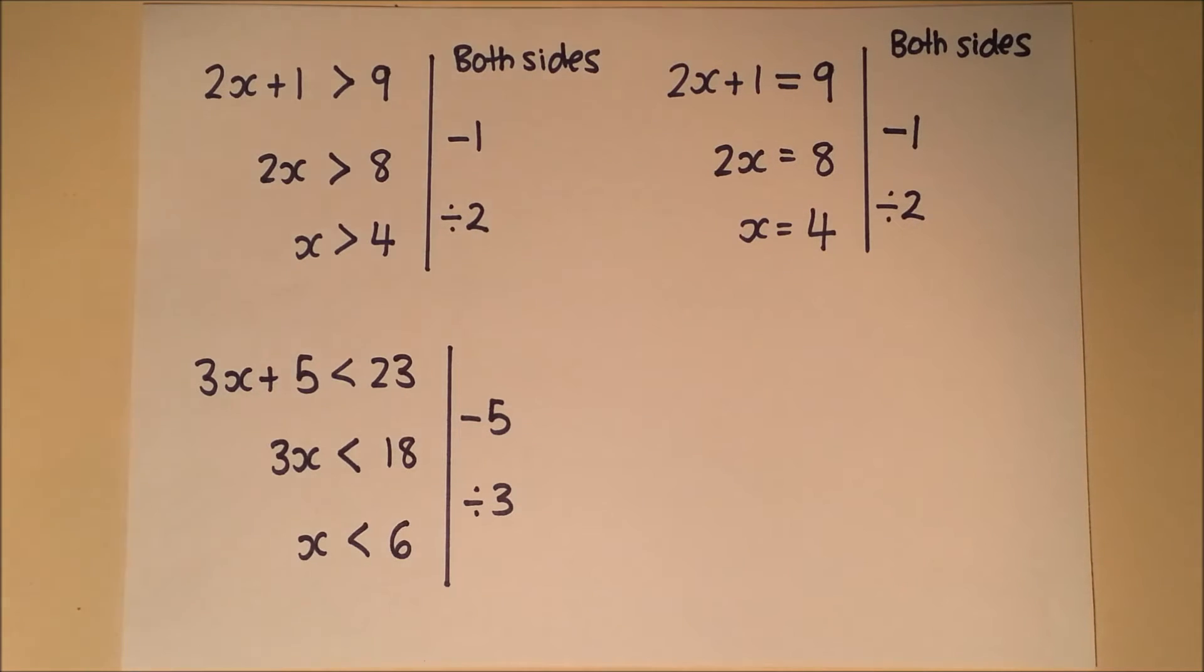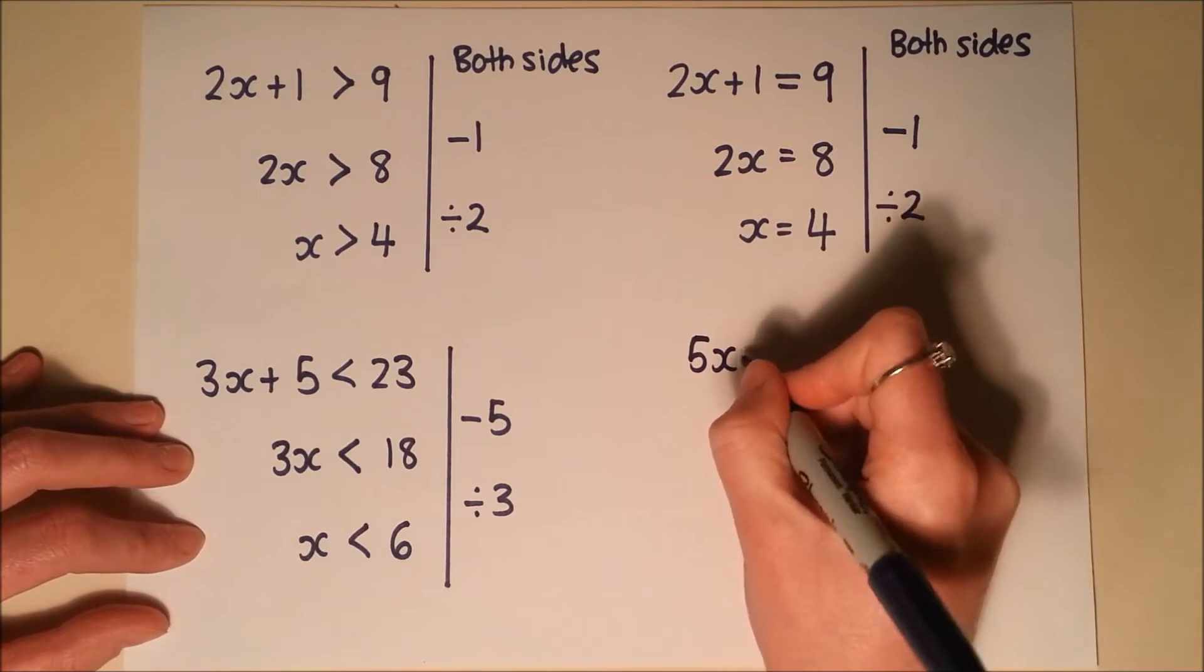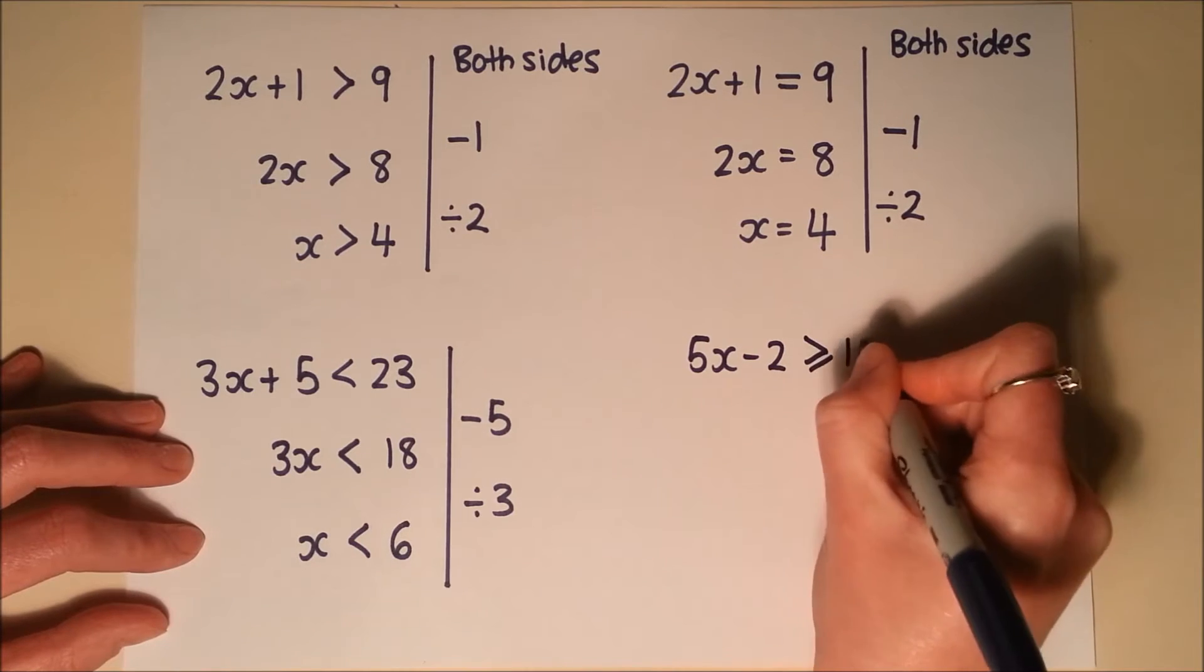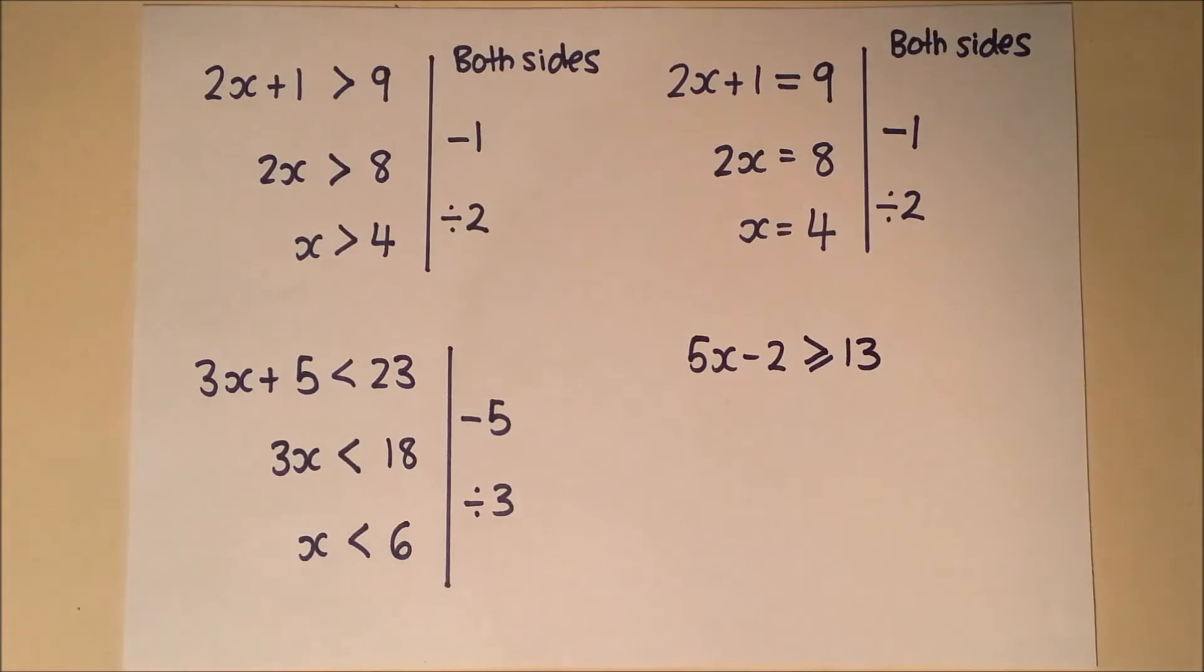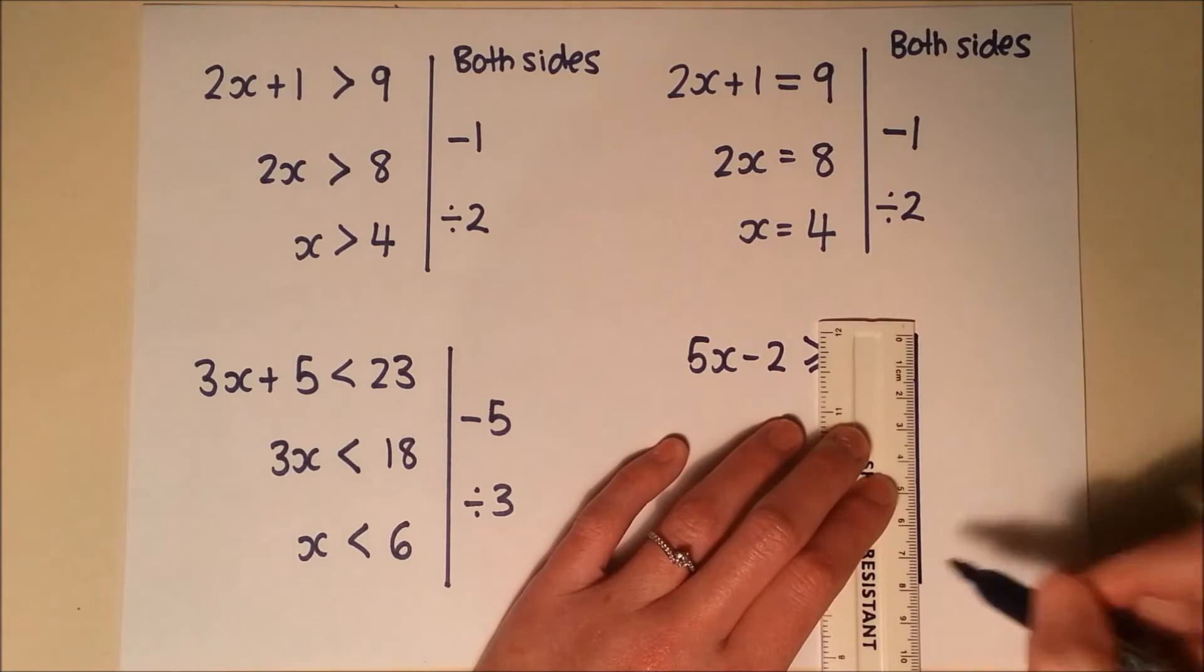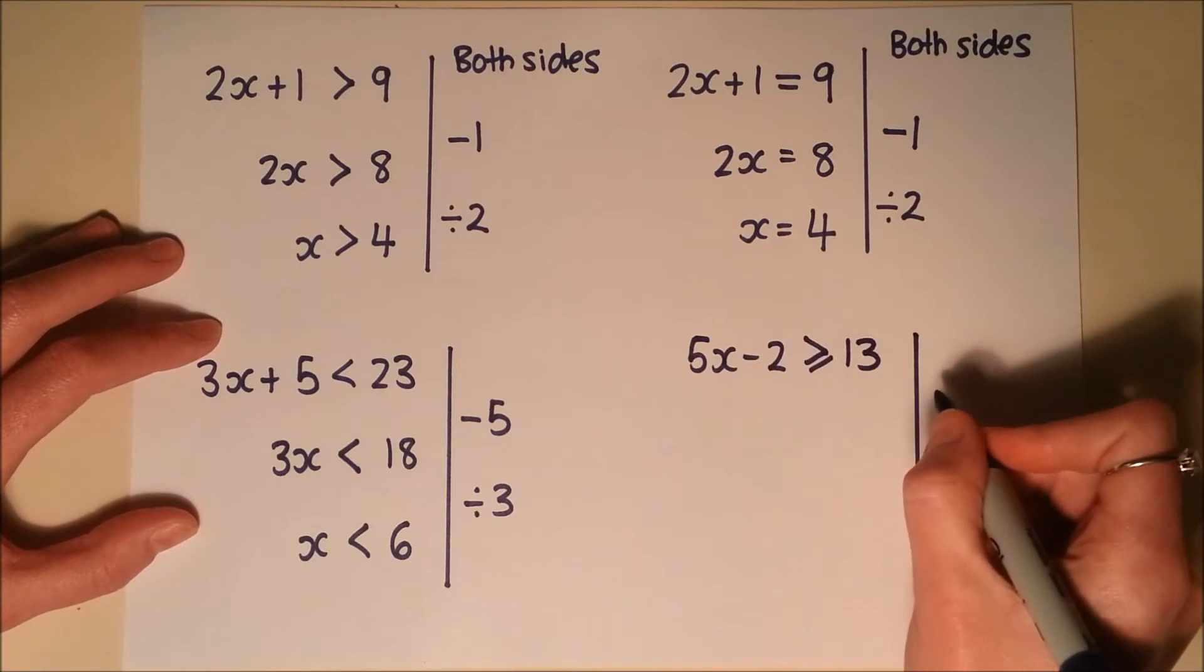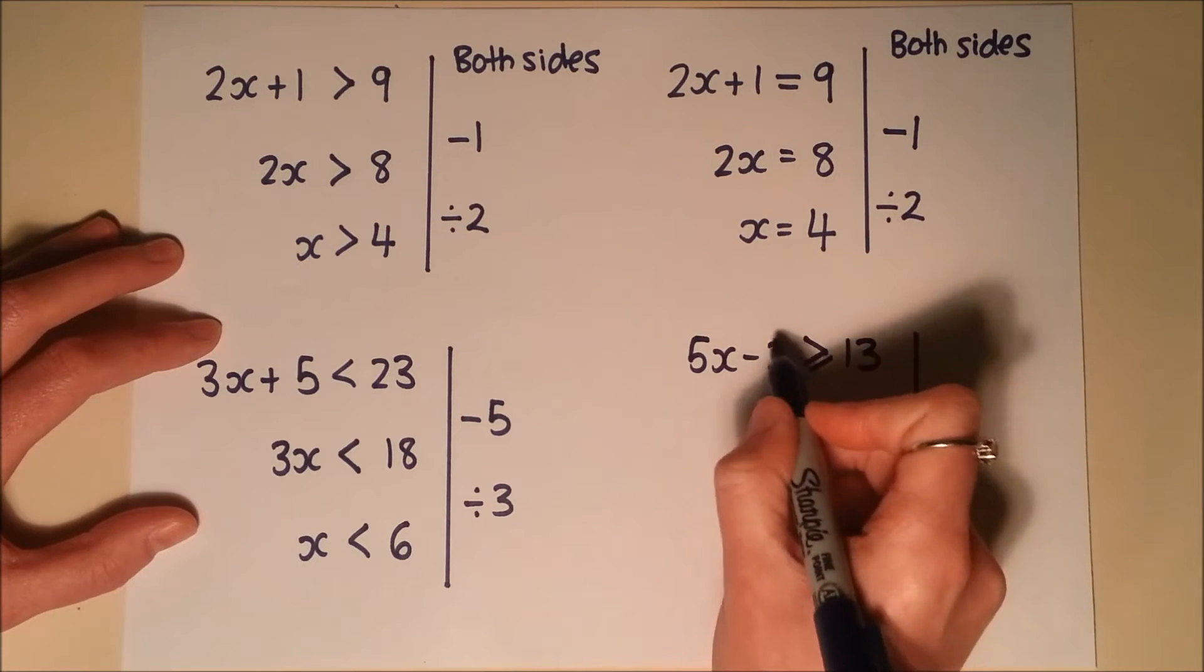And then finally, 5x minus 2 is greater than or equal to 13. So again, exactly the same process. This is just how I like to do my working out. I'm going to add 2 to both sides to cancel out my minus 2.